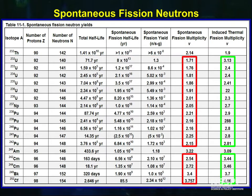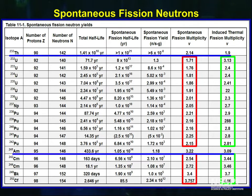As you can see, the neutron multiplicity is generally less for spontaneous fission compared to induced fission, the exceptions being thorium-232 and americium-241.